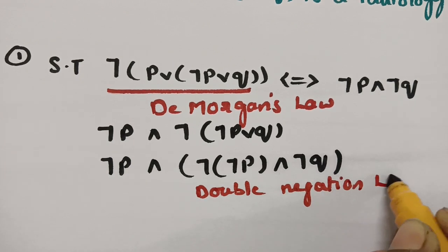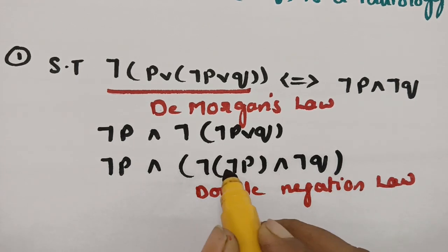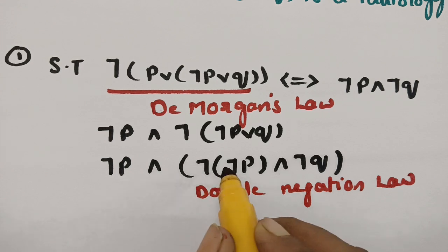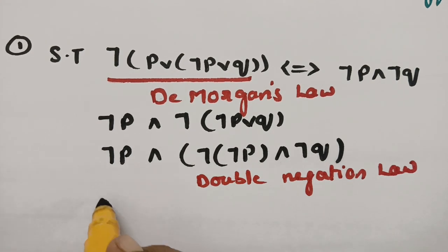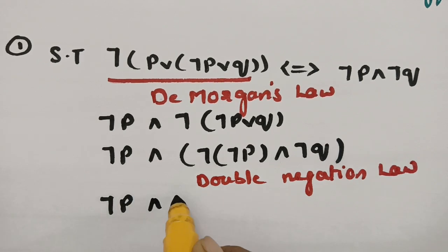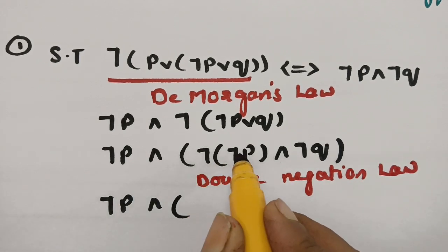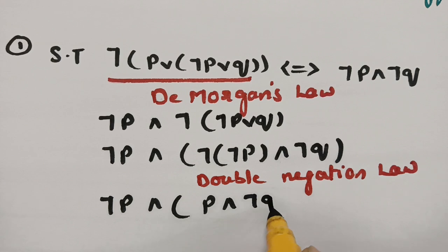According to the double negation law, if you have two negations, they cancel out — just like minus times minus equals plus. So negation of negation P becomes P. Therefore, the expression becomes: negation P and (P and negation Q).